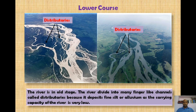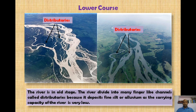In the lower course, the river is in an old stage. The river divides into many finger-like channels called distributaries or braided streams, because it deposits sediments of alluvium as the carrying capacity of the river is very low. The carrying capacity is very low because, in the lower course, due to the very gentle slope of the land, the velocity of the river water is very, very less.